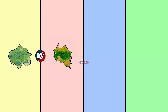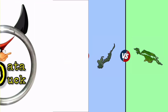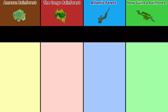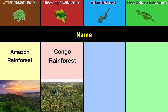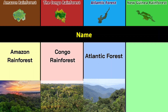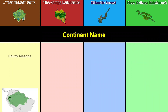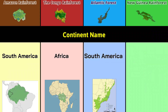Hello guys, today we see Amazon Rainforest versus Congo Rainforest versus Atlantic Forest versus New Guinea Rainforest. Welcome to the Data Duck YouTube channel. The four rainforests compared are: Amazon Rainforest, Congo Rainforest, Atlantic Forest, and New Guinea Rainforest.